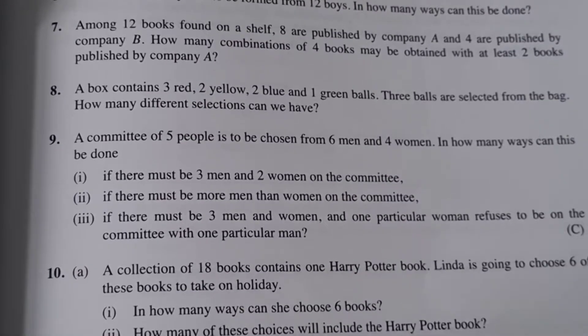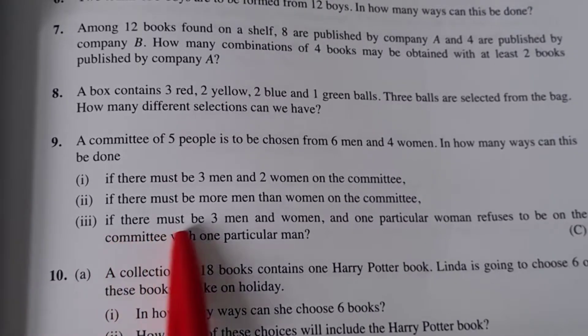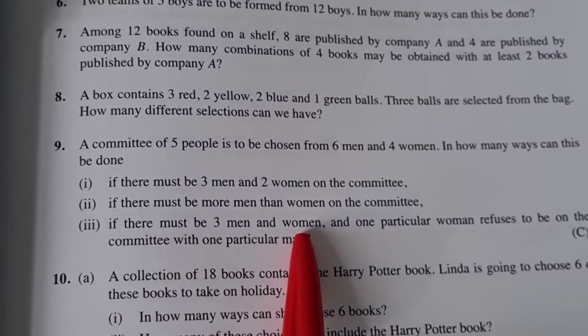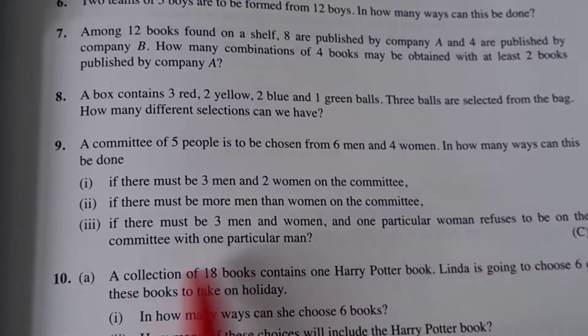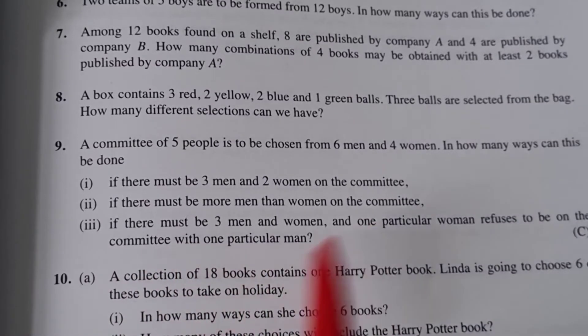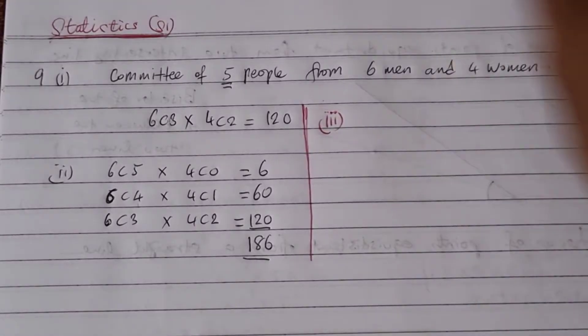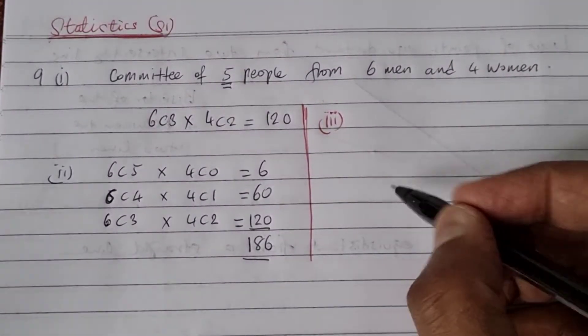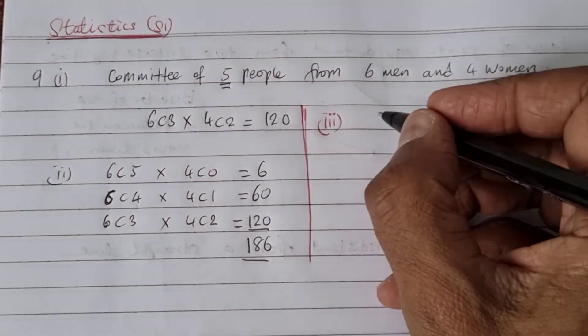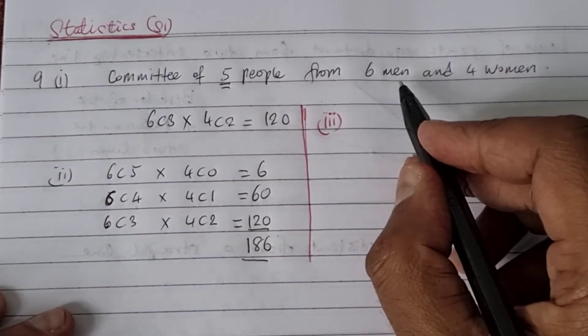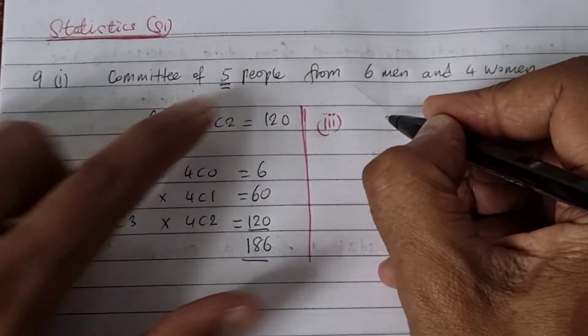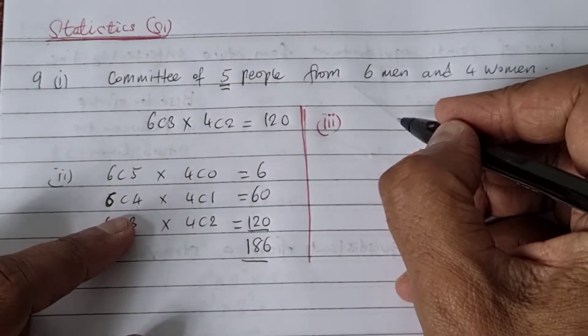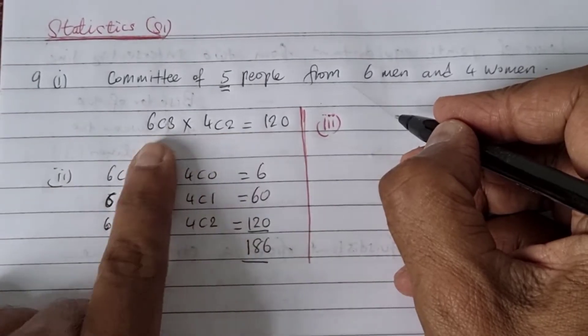Now in the third part of the question, if there must be three men and women, and one particular woman refuses to be on the committee with one particular man. Now how are we going to do this? First of all, let's see. This woman is refusing to be with the man. So let's say the man is still in the committee, and we have to choose three men, because there's got to be three men and two women.